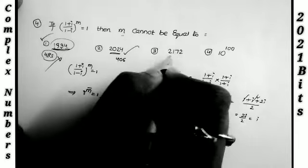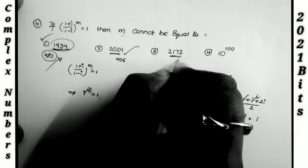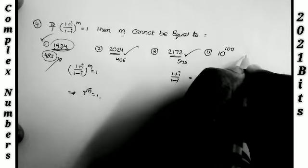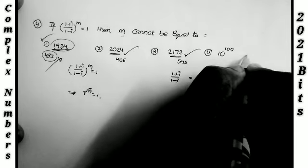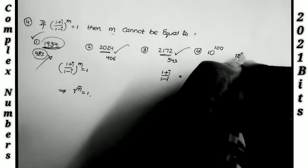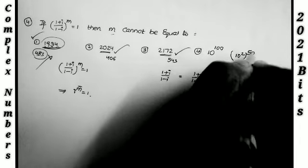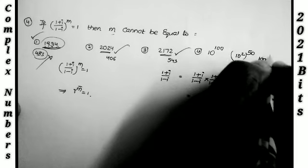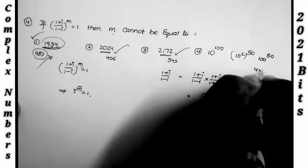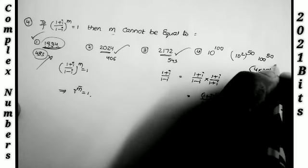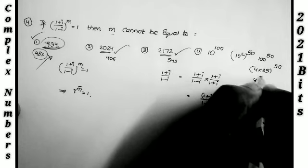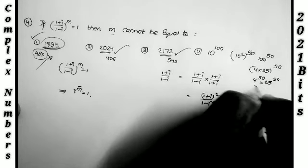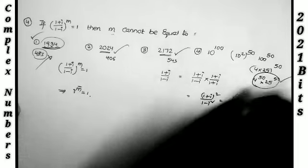Checking the other options: 16 is divisible by 4; 46 is divisible by 4; and 10^100 = (10²)^50 = 100^50 = (4×25)^50 = 4^50 × 25^50, which is a multiple of 4. So all other options are multiples of 4, confirming m cannot be 1934.